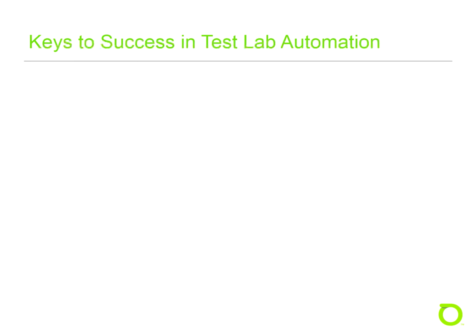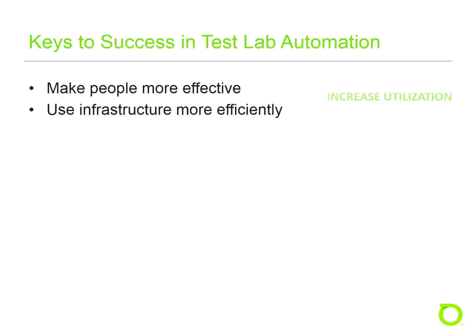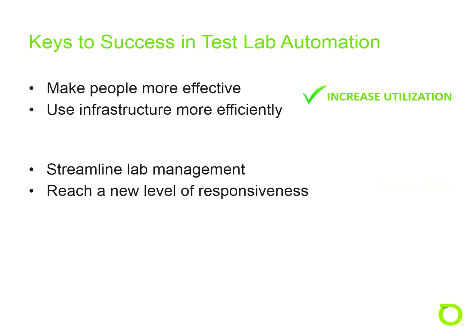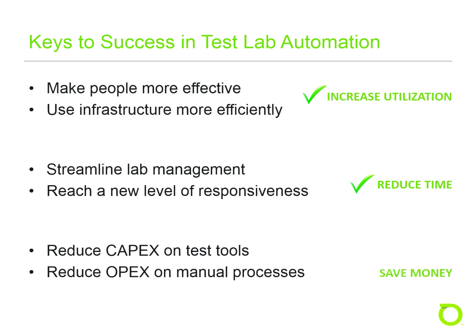Now let's take a look at the keys to success when implementing a test lab automation project. First, we need to increase utilization by making people more effective and using infrastructure more efficiently. Next, reduce the time required to complete a test cycle by streamlining lab operations through automation to reach a new level of responsiveness. The last and most important key to success is to save money — by reducing spend on test tools and infrastructure and reducing costs through a reduction in manual, repetitive processes.